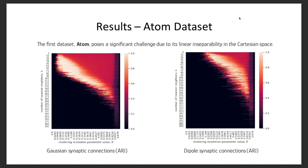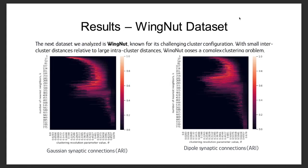In the Wingnut dataset, clustering poses a challenge due to its unique distribution, where inter-cluster distances are small compared to intra-cluster distances. This complexity can hinder traditional algorithms' ability to distinguish closely spaced clusters while preserving clear separation. Notably, the network with DeepL connections achieved superior RAND values in this dataset. This superiority is attributed to the network's prioritization of nearby points, a characteristic more pronounced in DeepL connections compared to Gaussian connections.